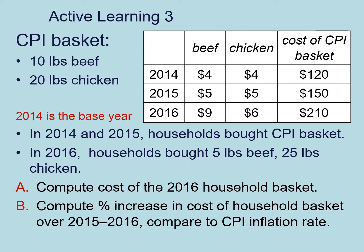So in this problem, we're going to define the CPI basket of goods as 10 pounds of beef and 20 pounds of chicken. Here on this table on the right, you also have the data on the prices of beef and chicken and the respective cost of the CPI basket in 2014, 2015, and 2016.